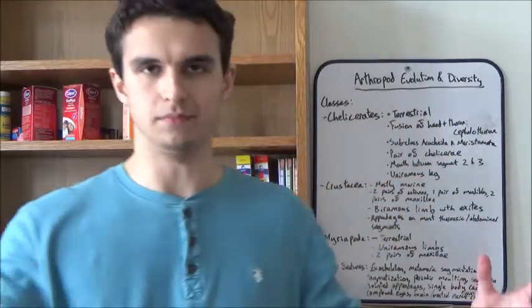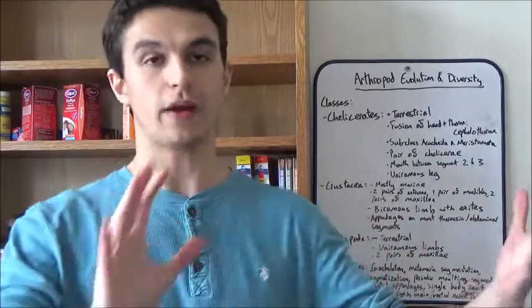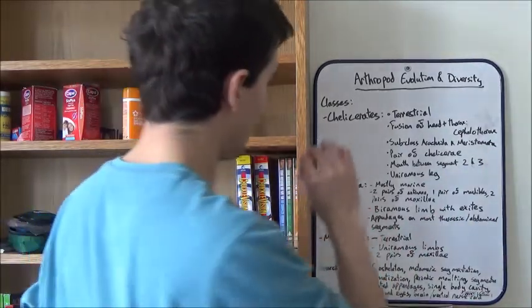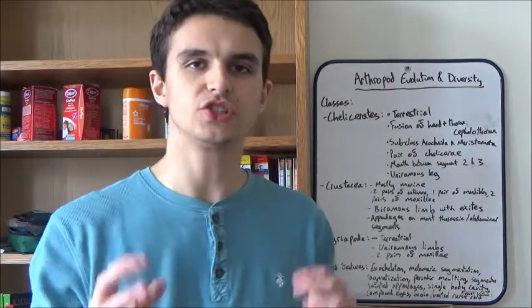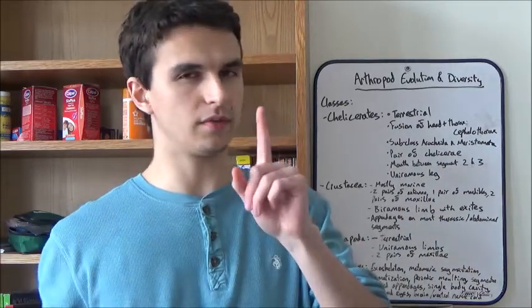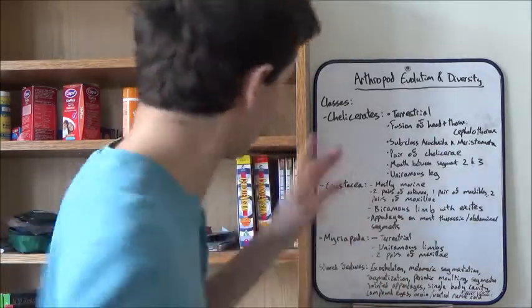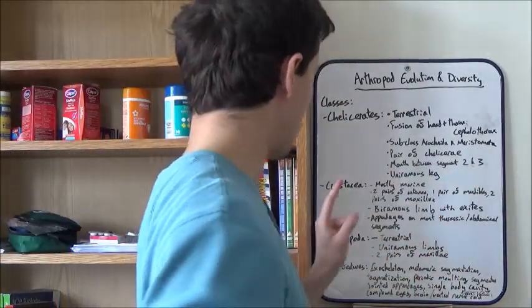Also we've got to talk about the limbs. The limbs of the chelicerates are described as uniramus. We're going to expand on that when we move on to our second class of arthropods.